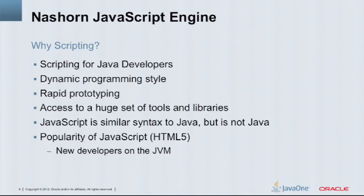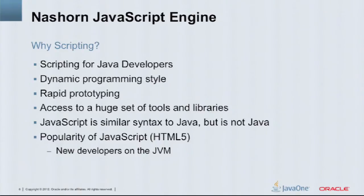NASHORN talks directly to Java. We chose JavaScript over other languages because it has a fairly similar syntax to Java, but is very different in terms of scripting capabilities. The choice is also driven by the popularity of HTML5 currently and more people getting involved in JavaScript — we hope to attract more developers to the platform.